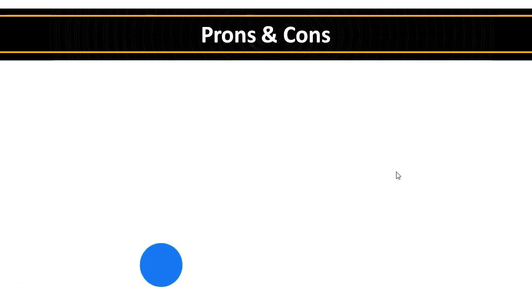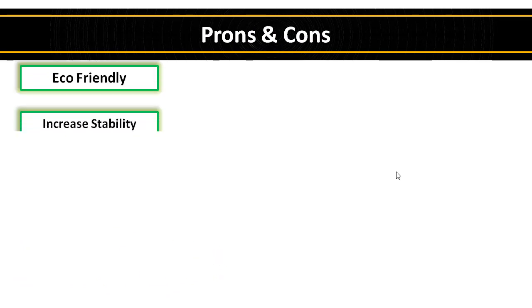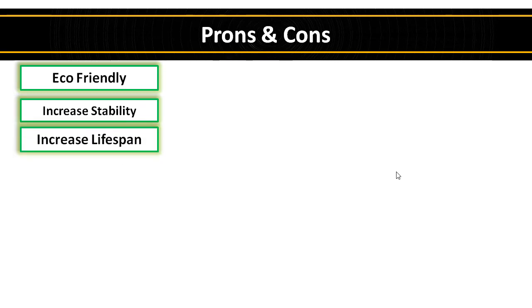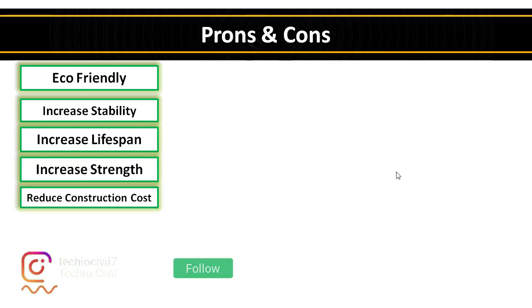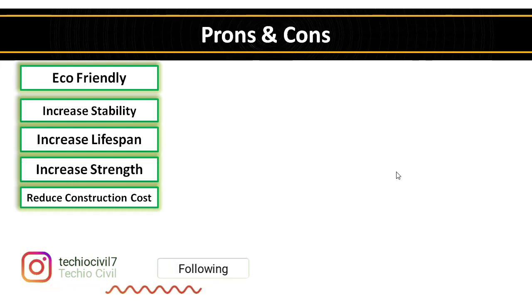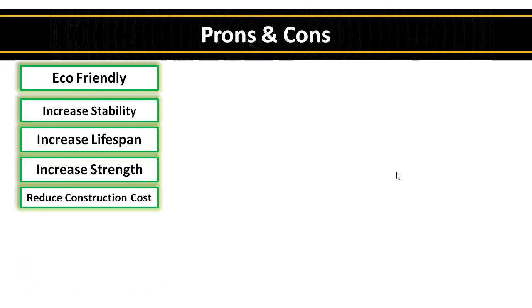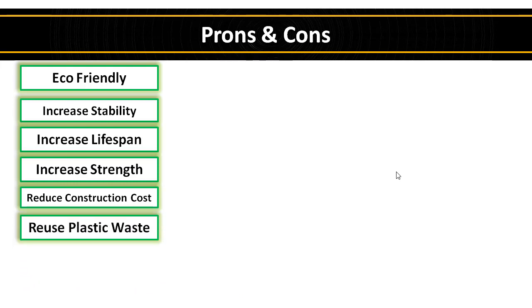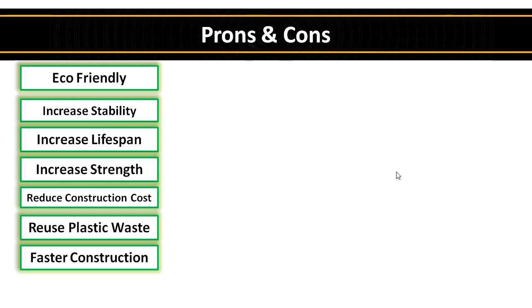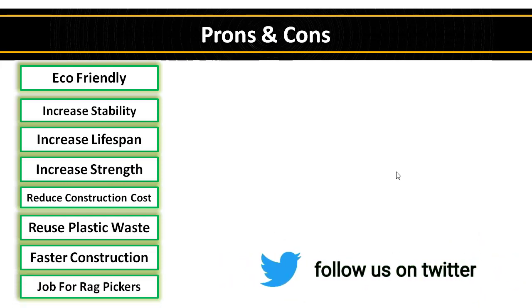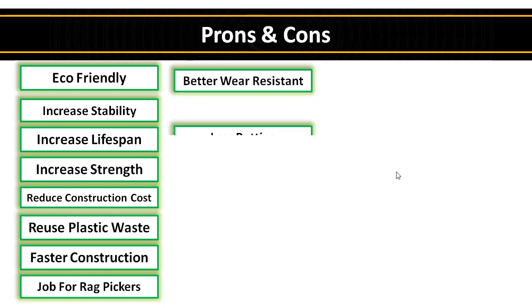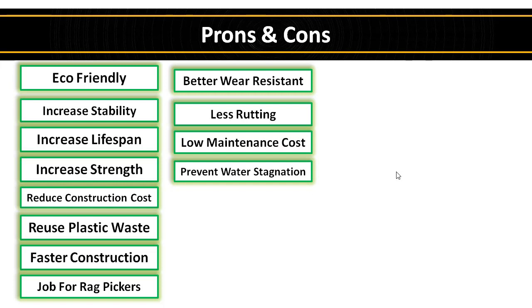Let's see the advantages and disadvantages of plastic roads. Plastic roads are an eco-friendly and sustainable solution. They increase stability and increase the lifespan of roads by two to three times. Plastic roads have more strength compared to standard roads. By using plastic waste, they reduce high consumption of asphalt, which ultimately helps reduce construction costs and saves petroleum resources. Reusing plastic waste helps degrade the height of dumbyards. Plastic road construction is faster compared to standard road. It develops more jobs for rag pickers. Plastic roads have high wear and tear resistance. Rutting in plastic roads is very less. Plastic roads have low maintenance costs and prevent water stagnation.